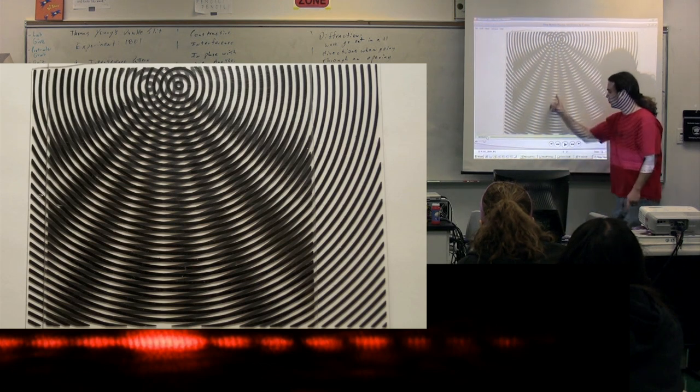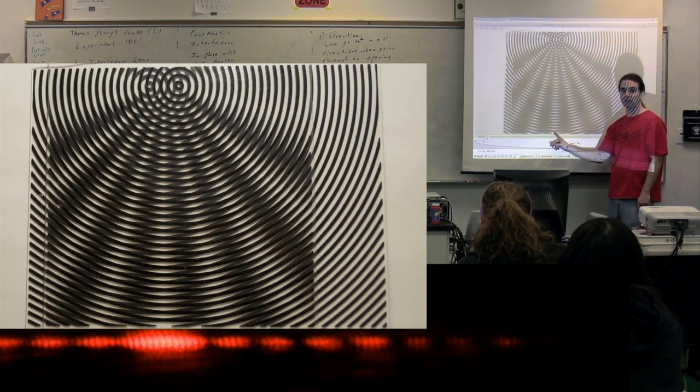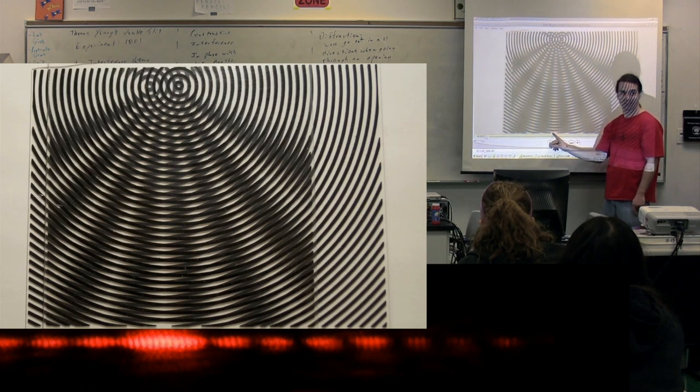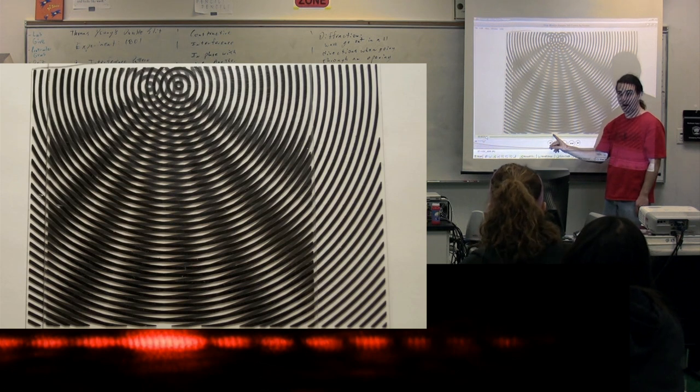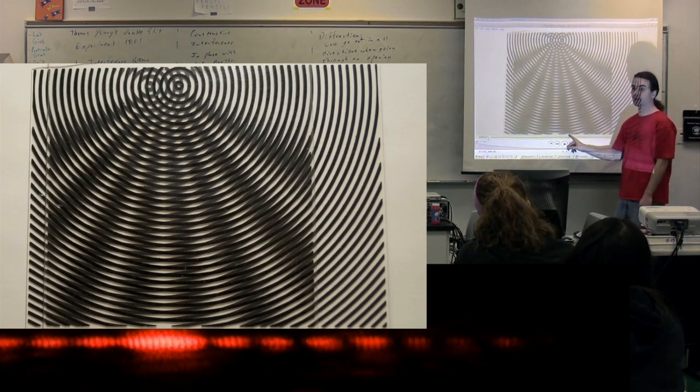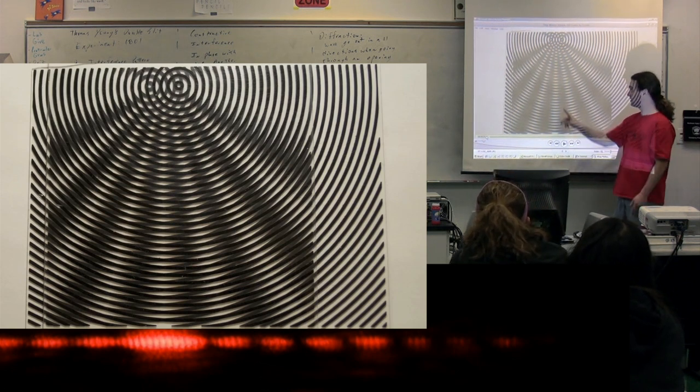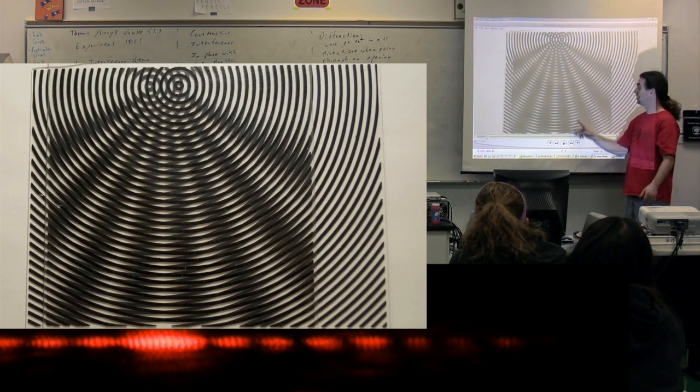On the wall, you would see constructive interference or what kind of light? Class. Constructive interference, bright light. Then destructive interference, no light, constructive, destructive.